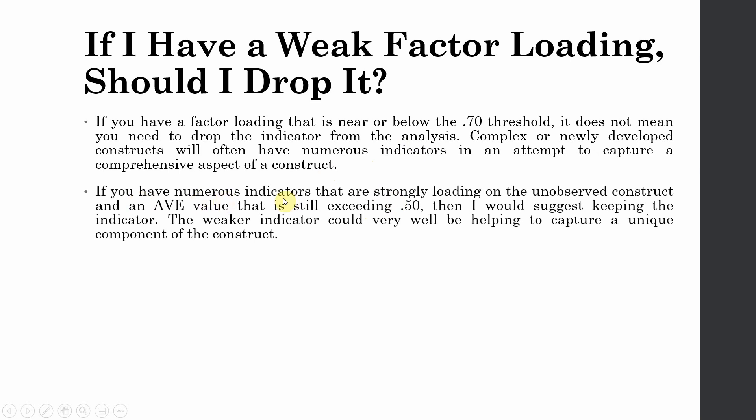If you have numerous indicators that are strongly loading onto the unobserved construct and an AVE value that is still exceeding 0.50, then I would suggest keeping the indicator. Although your indicator is less than 0.70, but overall your AVE exceeds 0.50, then you should keep the indicator. The weaker indicator could very well be helping to capture a unique component of the construct. This is very important.